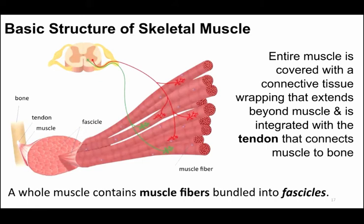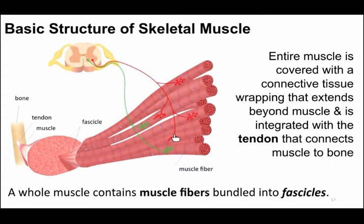Looking at the structure of skeletal muscle again: each single muscle fiber is contacted by a set of axon terminals. A single motor neuron will often contact more than a single muscle fiber. That motor neuron plus all of the muscle fibers it innervates is what a motor unit is. All the cells in a motor unit are going to contract at the same time because synaptic transmission from the axon terminals occurs simultaneously.